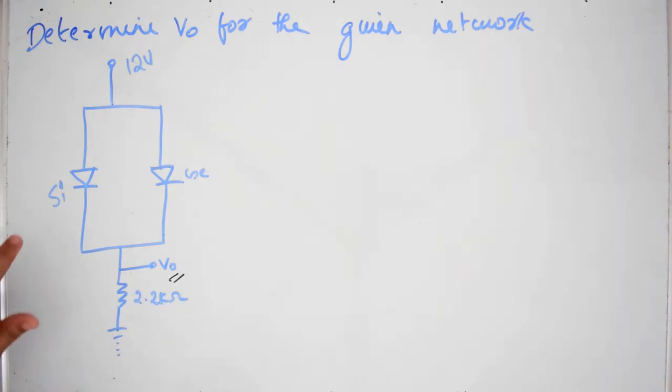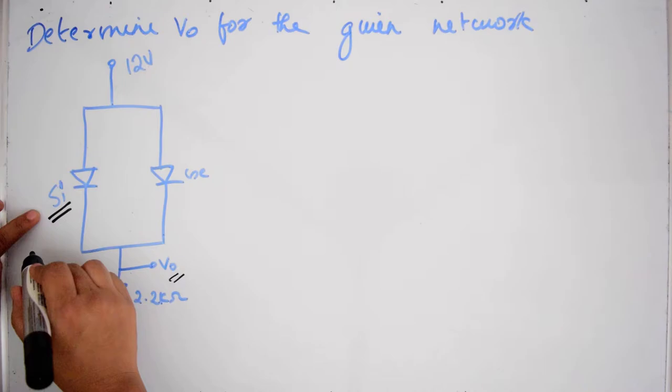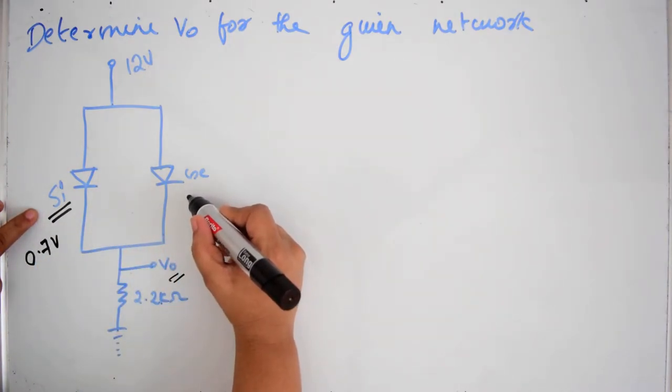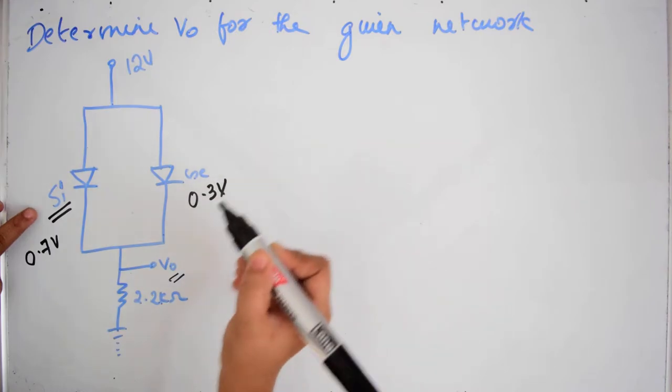We know at what voltage each diode turns on: silicon diode at 0.7 volt and germanium diode at 0.3 volt.